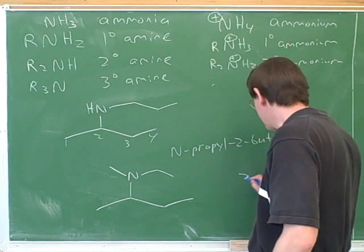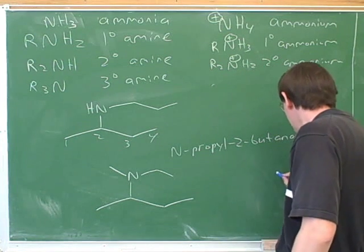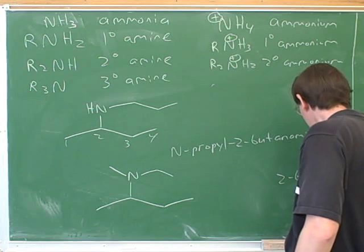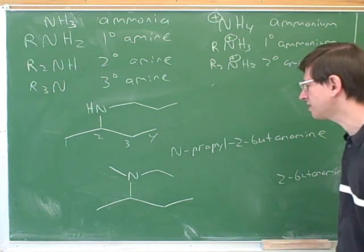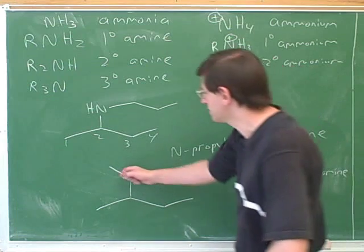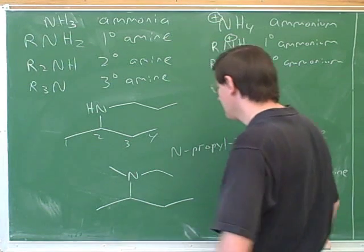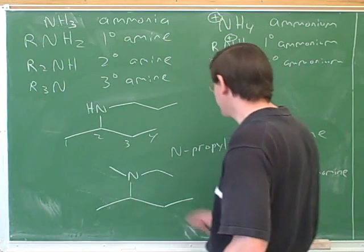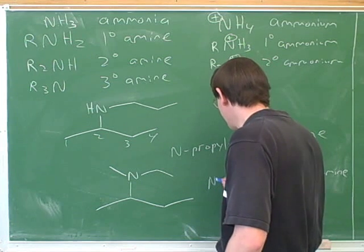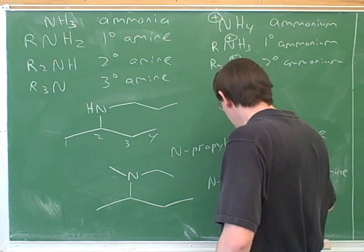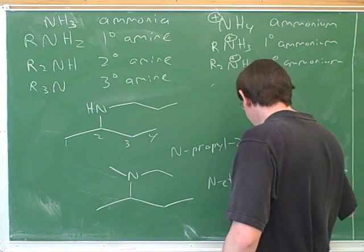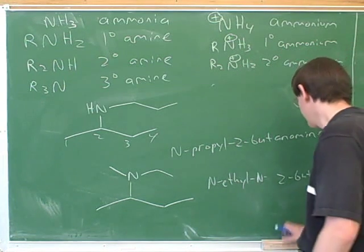You both said 2-butanamine. Now we have to be clear in our minds that there are two substituents — this substituent and this substituent. So we have to name this ethyl substituent and we need to say where it is. And then we need to name the other substituent and say where it is.